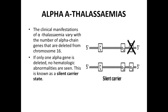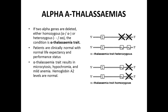If only one alpha gene is deleted, no hematological abnormalities are seen and the patient is a silent carrier. These patients are asymptomatic and do not have anemia, but they are carriers. If they find a partner who is also a silent carrier, their offspring may suffer from alpha thalassemia and present with serious disease.